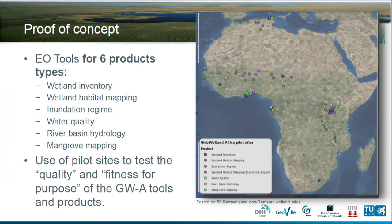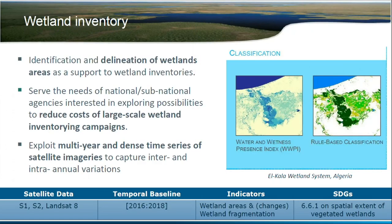We have those six product types, and we validated them at a number of wetland sites in Africa to see that the workflows are fit for purpose. The first one is wetland inventory — basically classification into wetland or non-wetland. It uses high-resolution data: Sentinel-1, Sentinel-2, and Landsat-8, so both radar and optical. It's based on time series analysis of those observations.